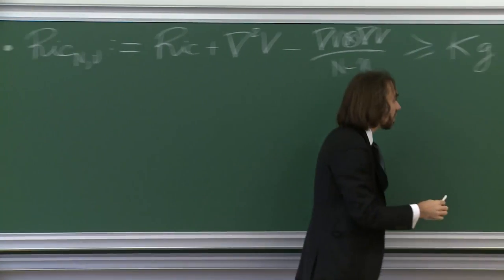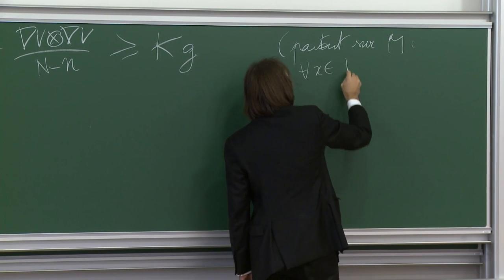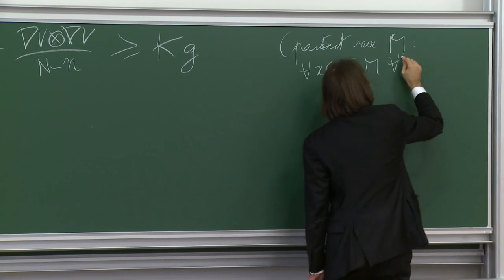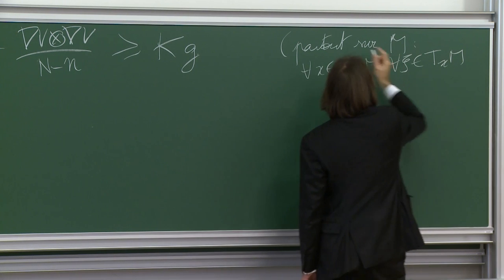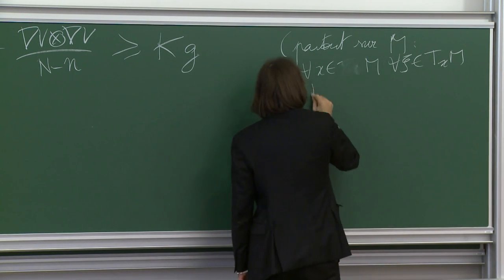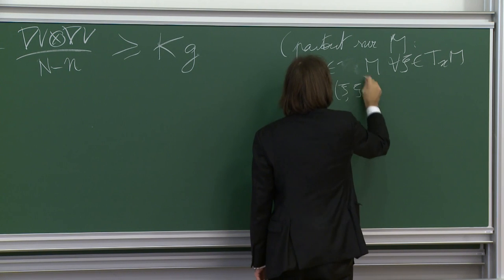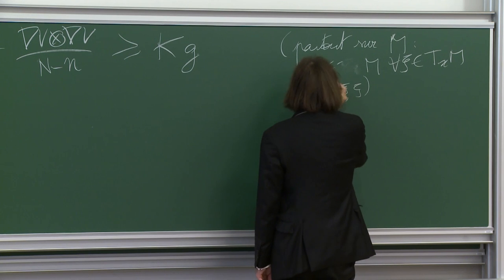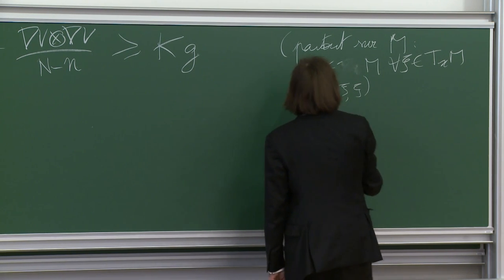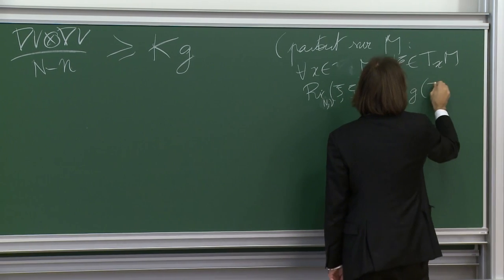Plus précisément, pour tout x dans M et tout ξ dans T_x M, on a Ric_{N,ν}(ξ, ξ) ≥ K g(ξ, ξ). C'est une inégalité au sens des matrices symétriques, valable en tout point et pour toute direction tangente.